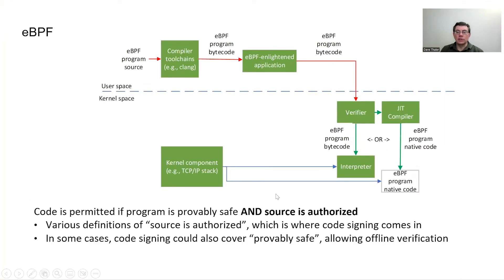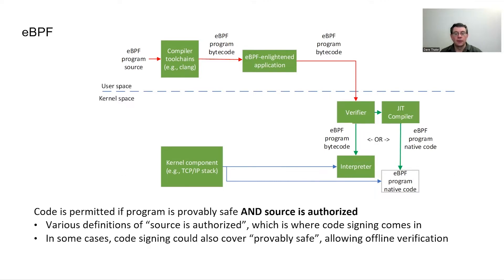On the top you see a classic arrangement of components for eBPF, where an eBPF program goes through a couple of different forms — from source code, if you're using a compiler, to eBPF bytecode, and then finally into native code after it's been JIT compiled. The verifier's job in the middle, where it goes from the red line to the green line, is to decide whether that program is authorized to run. That's done by asking: is it provably safe, and at that same point in time, is the source that program actually authorized?